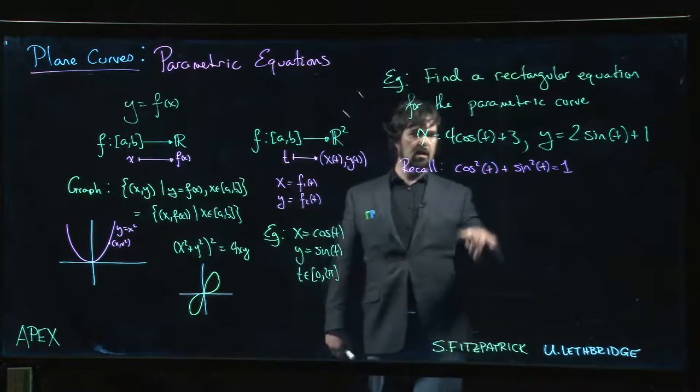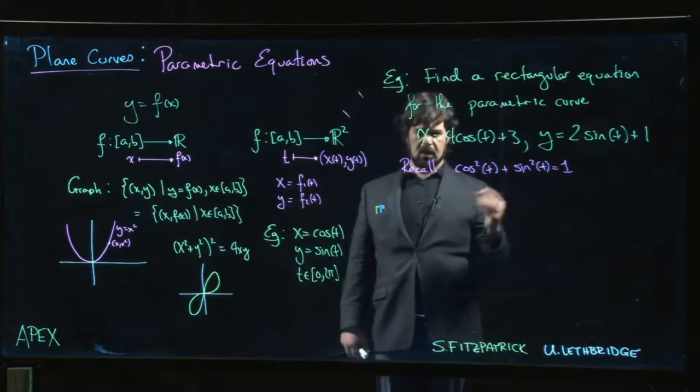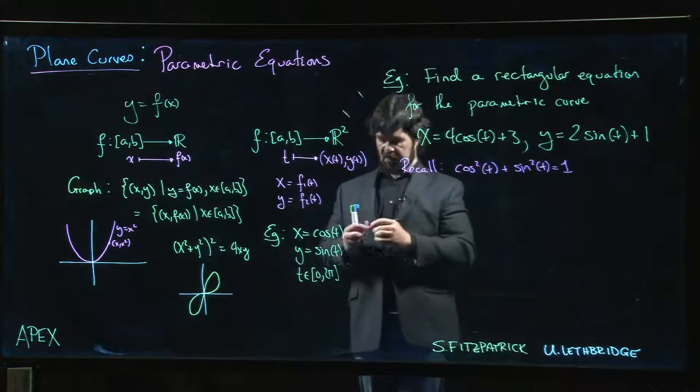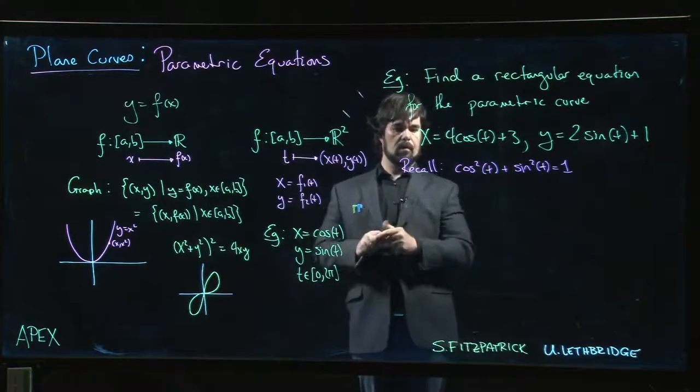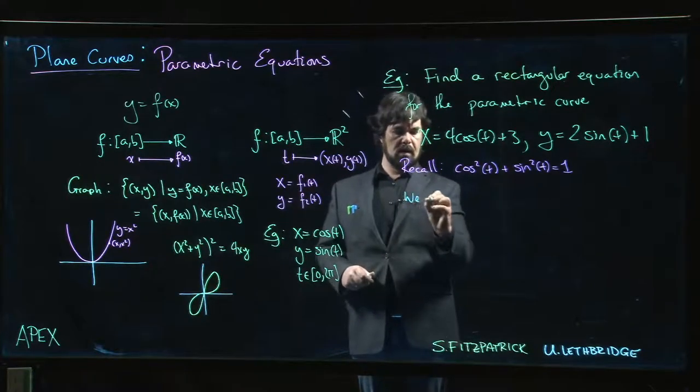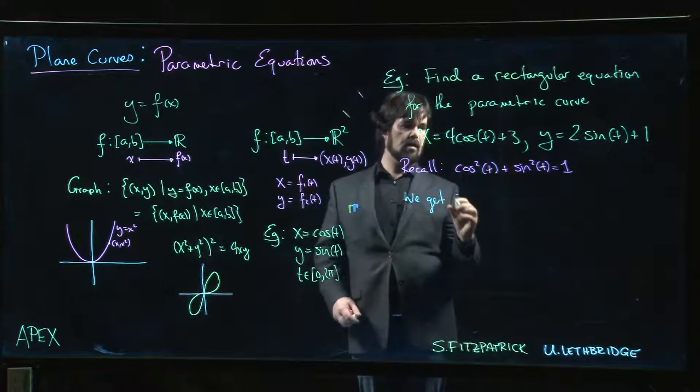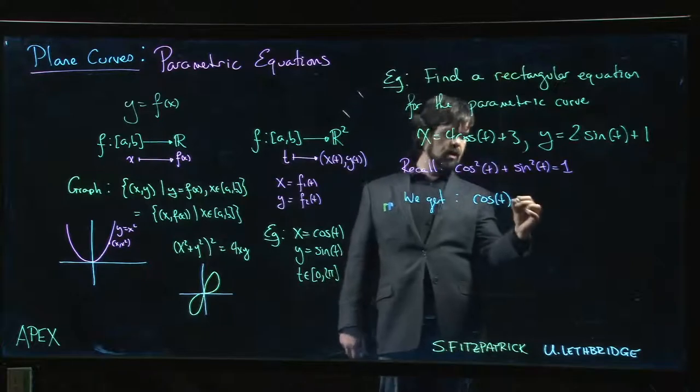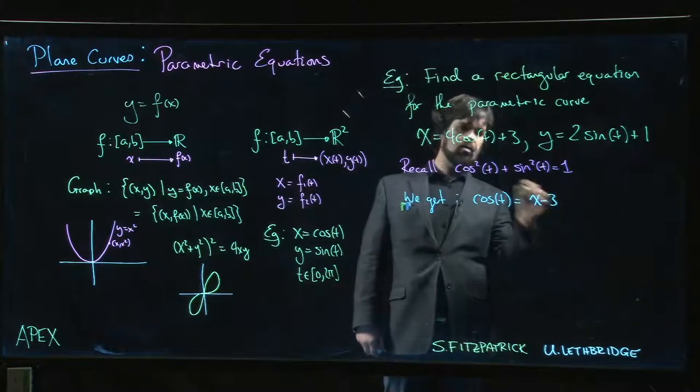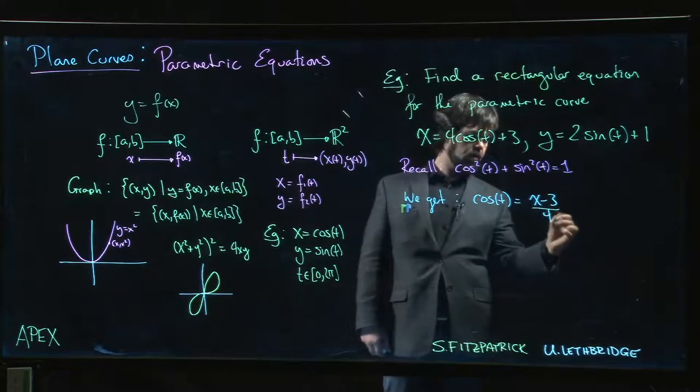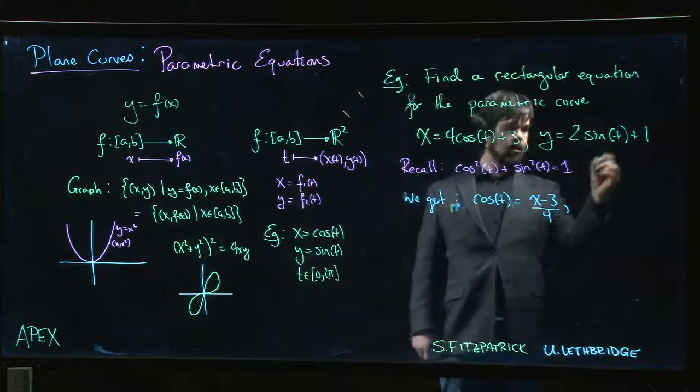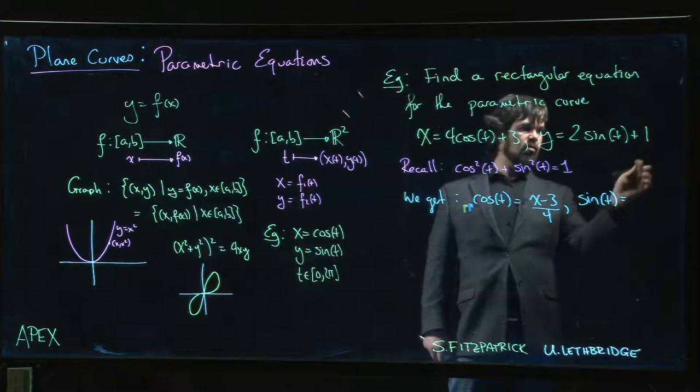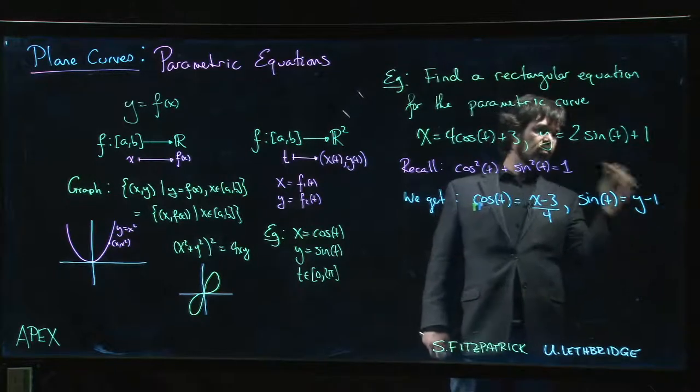From the equation for x, we get that cos(t) = (x - 3)/4. And from the equation for y, sin(t) = (y - 1)/2. Now we just use the identity and we're done.